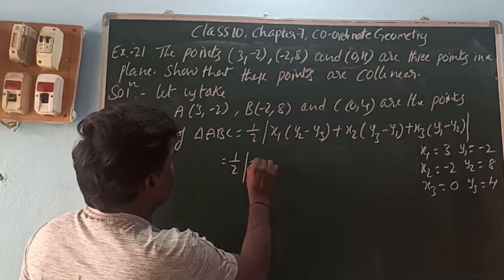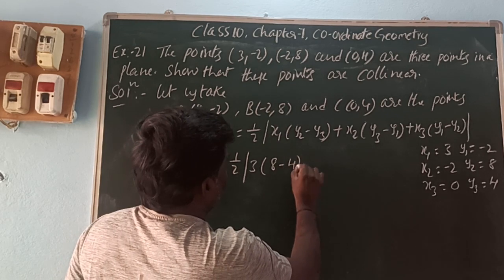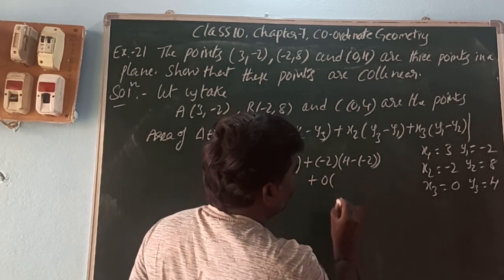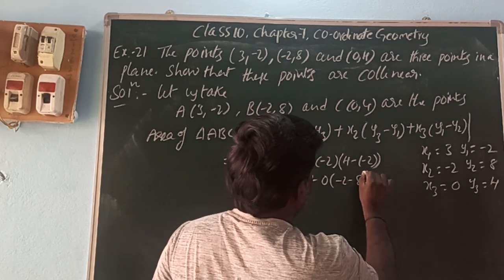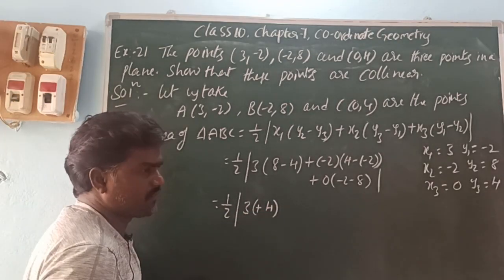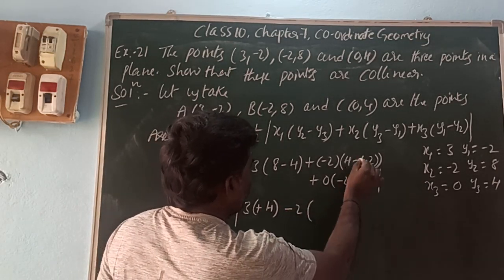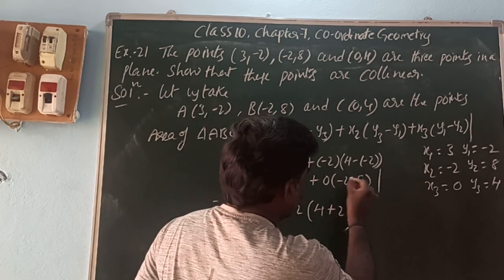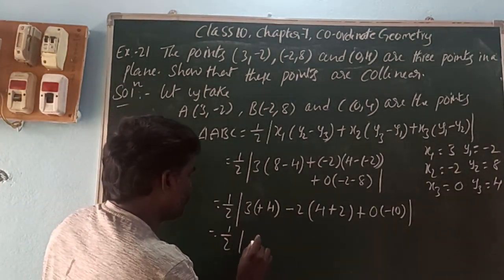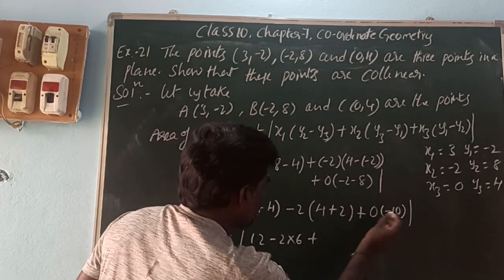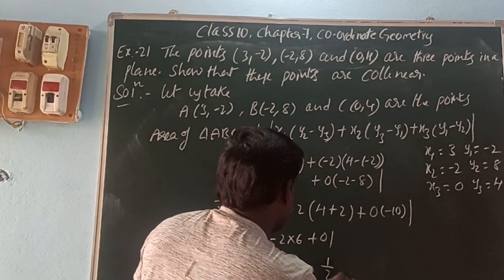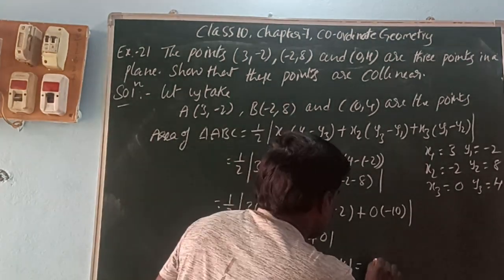Substituting: (1/2)|3(8 − 4) + (-2)(4 − (-2)) + 0((-2) − 8)| = (1/2)|3(4) + (-2)(6) + 0| = (1/2)|12 − 12 + 0| = (1/2)|0| = 0. Since the area of triangle ABC = 0, therefore A, B, C are collinear points.